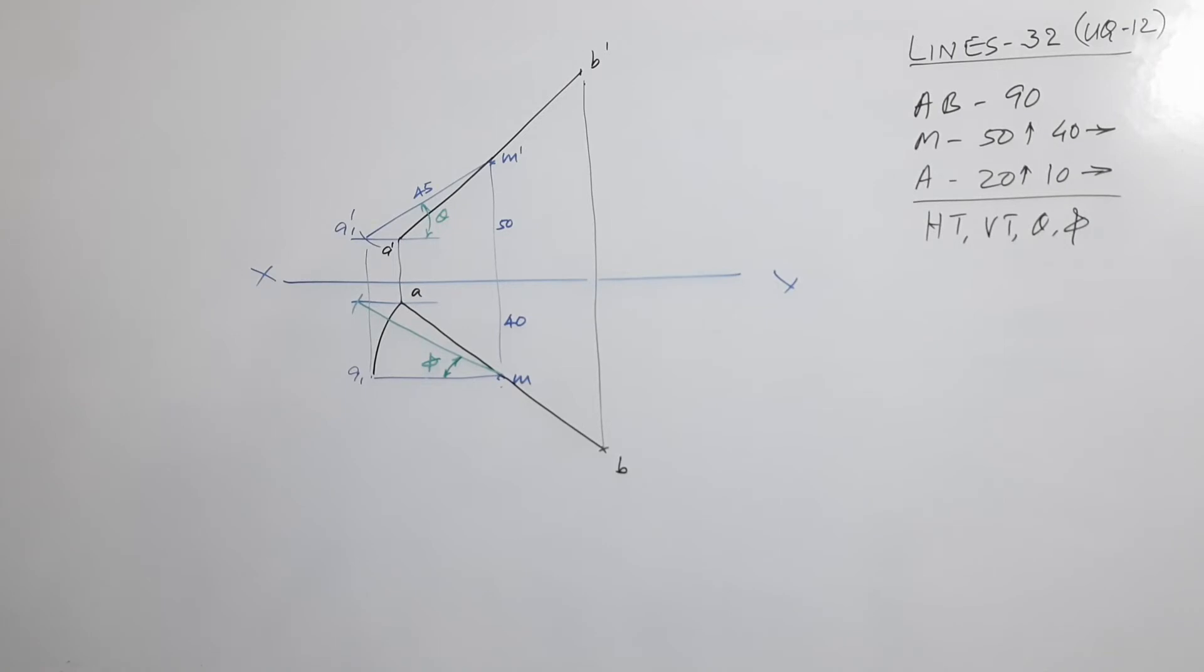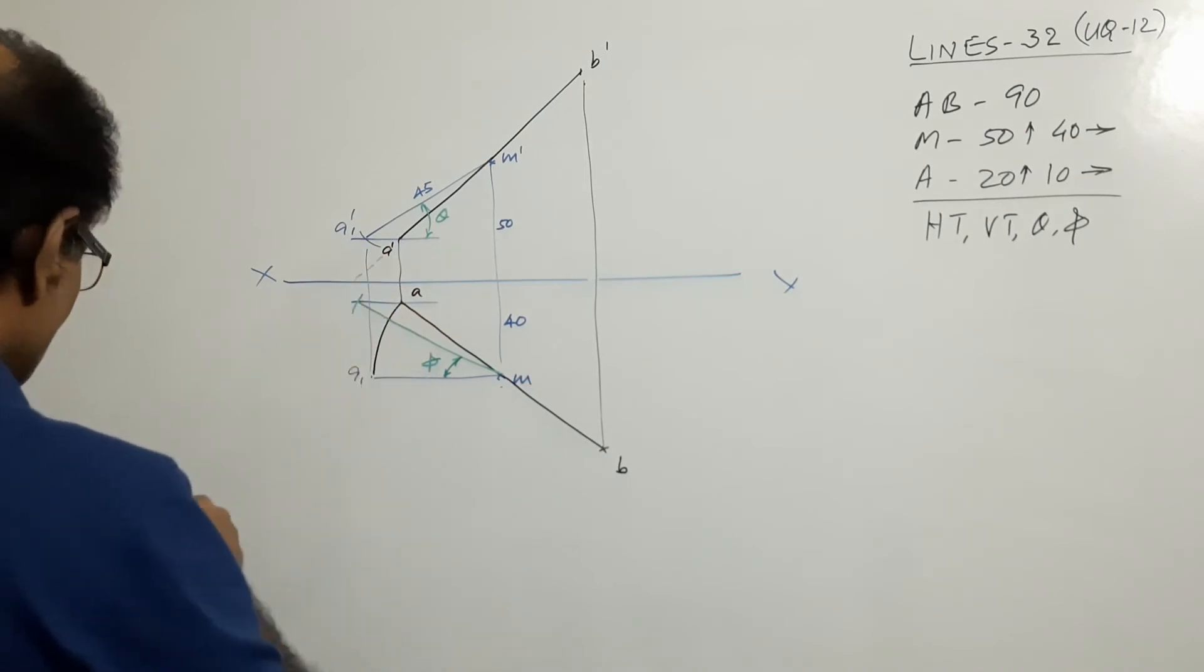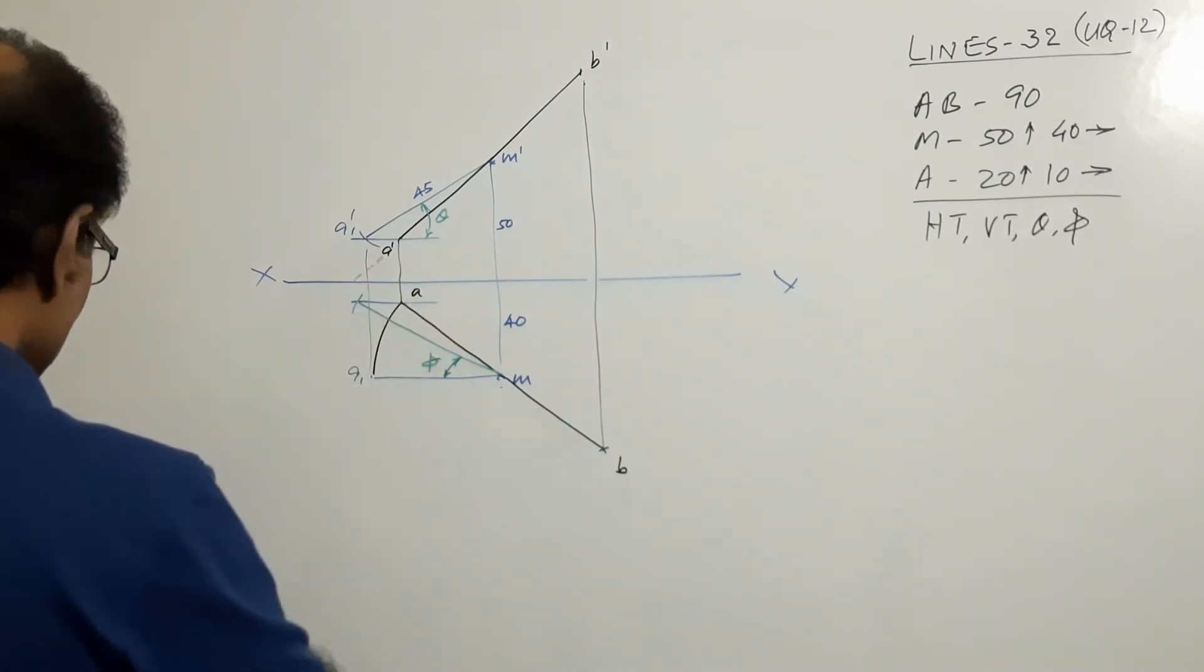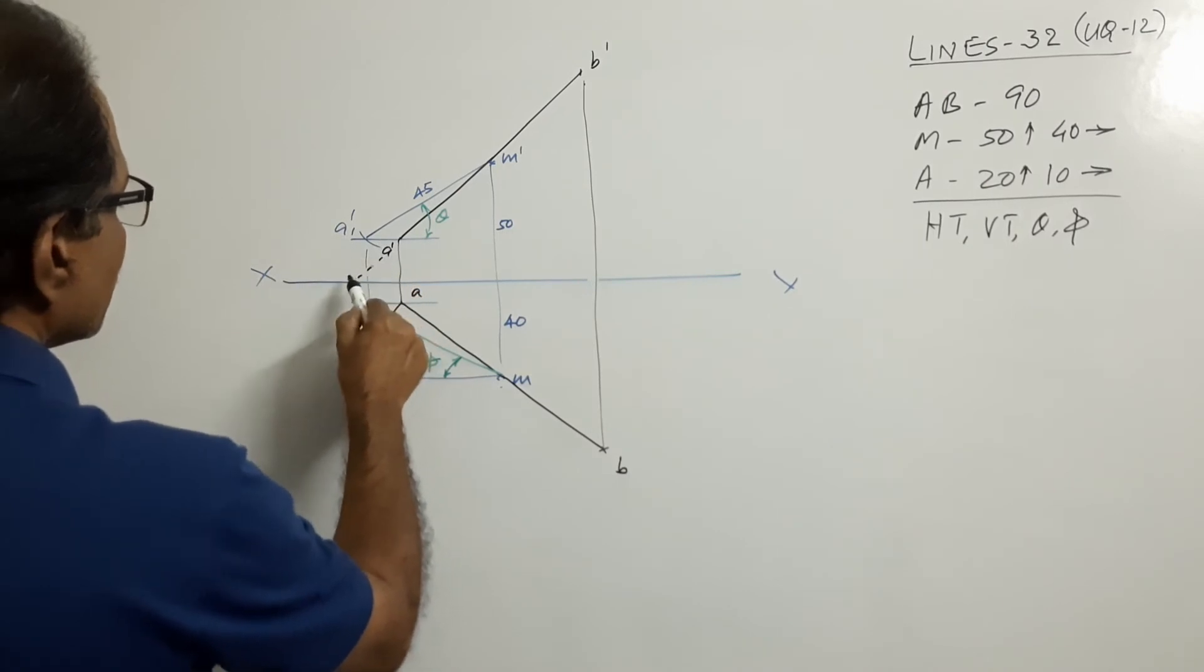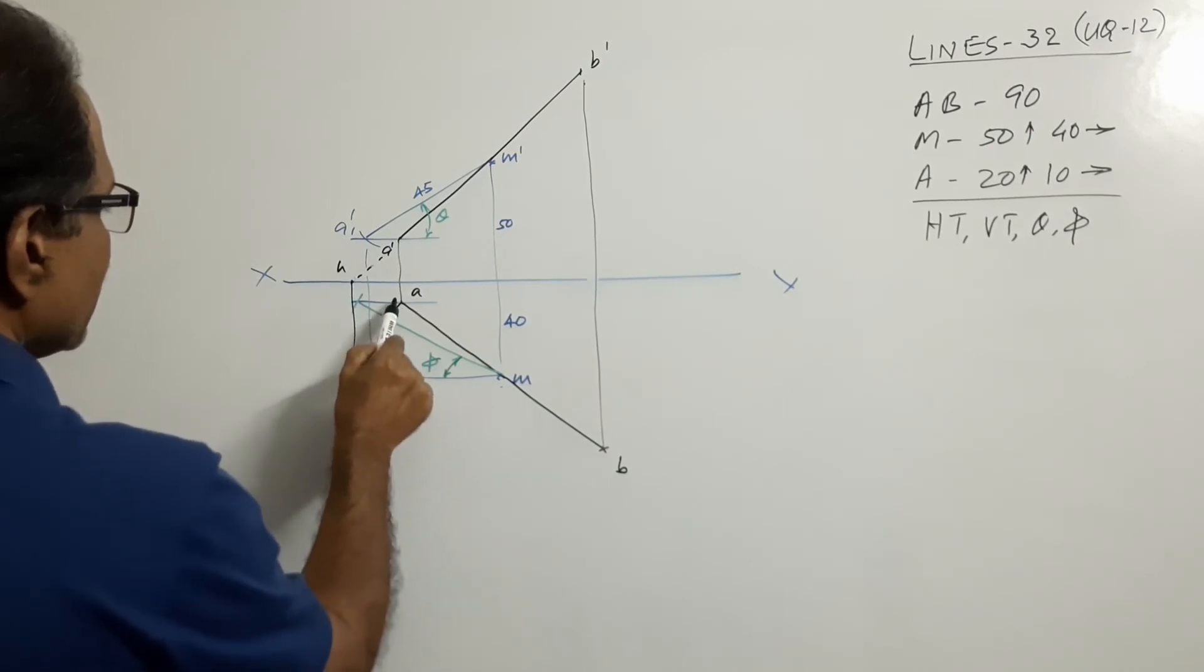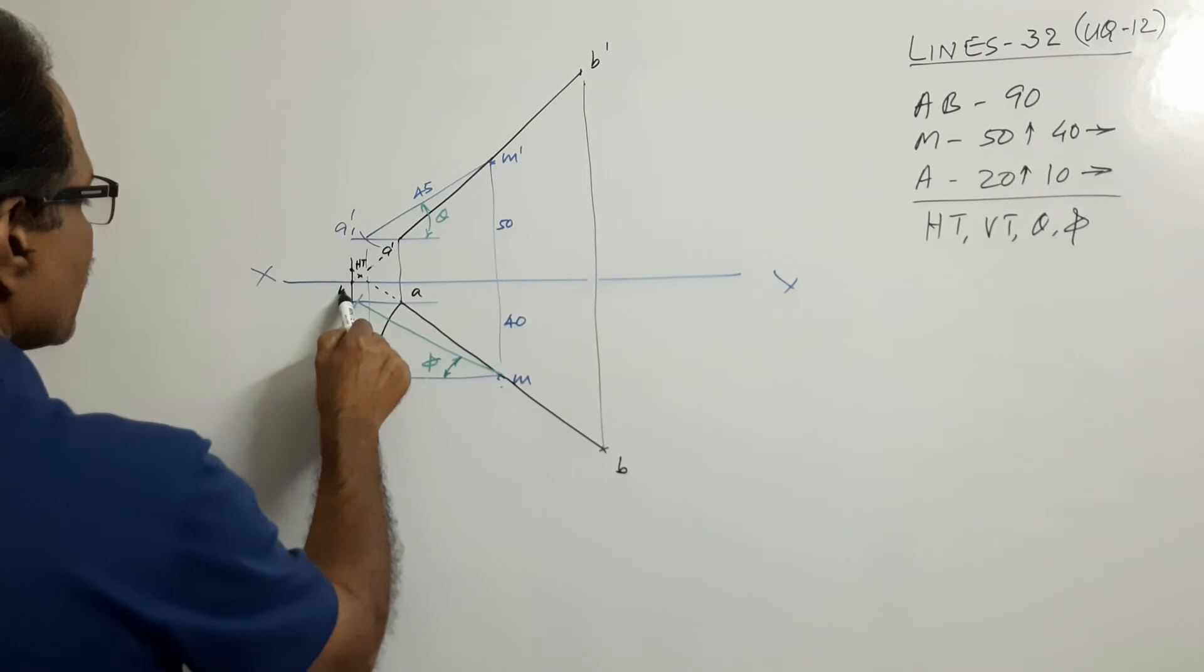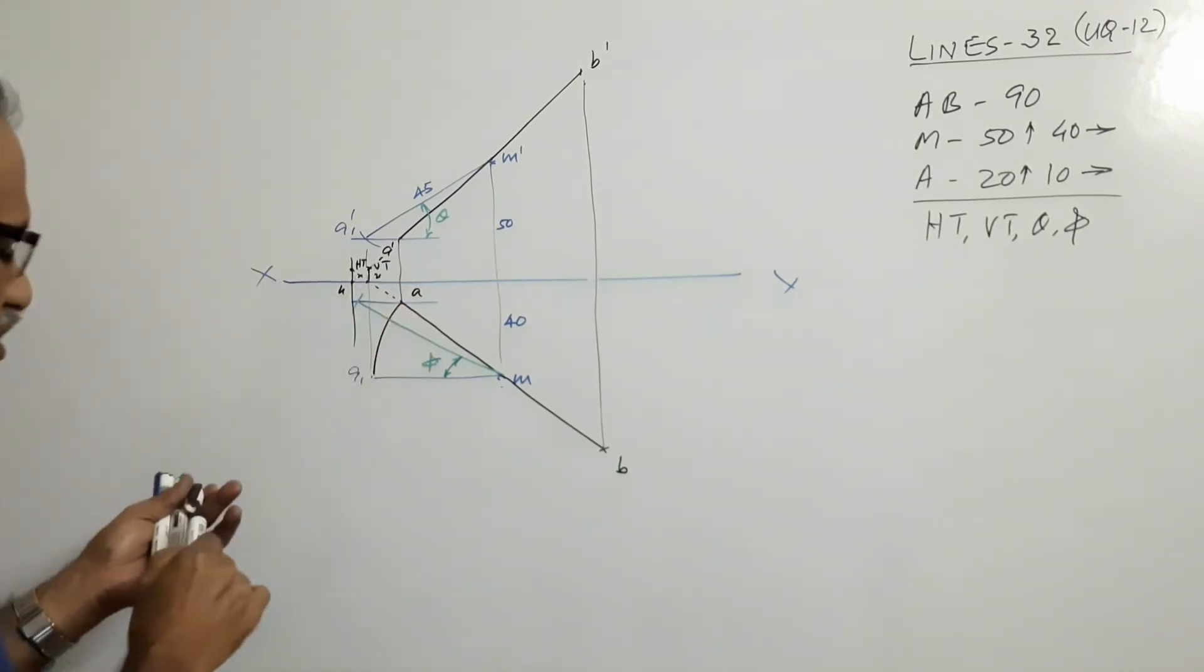To get the traces, you know the procedure. Extend the elevation. I'll draw with black. X, draw a vertical through X. Extend the plan. HT. Plan cut X. This is V. Draw a vertical through V. VT. They come very close when you draw it to actual dimensions.